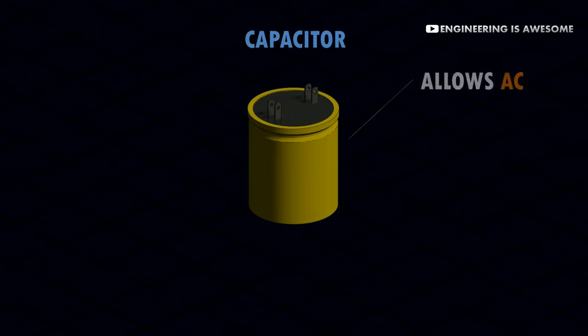We all know that a capacitor allows AC but blocks DC. Let's see the reason behind this.